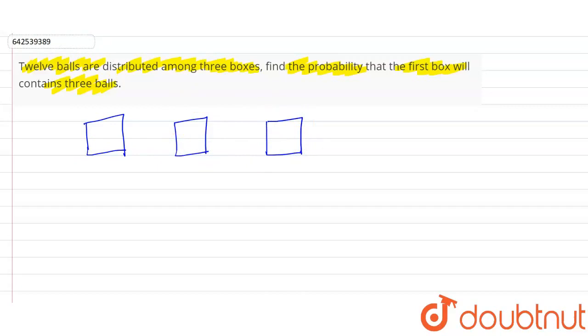First we will find the total number of ways of arranging 12 balls in these 3 boxes. For the first ball, first ball has 3 options. Either it will go in this, in this or in this. Similarly, all the 12 balls have 3 options. Second ball also has 3 options. So total number of ways of arranging 12 balls are 3 to the power 12.